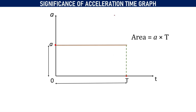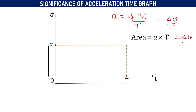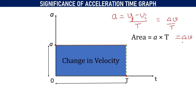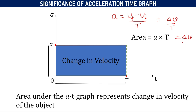If we consider the area under the graph, it will be represented by length times breadth. Since length is equal to acceleration and breadth is equal to time, area equals acceleration times time, which is 'a into t'. Now, acceleration equals change in velocity divided by time taken — that is delta V divided by T. Rearranging this equation, we get: a into t equals delta V, or change in velocity. Therefore, the area under the AT graph represents the change in velocity of the object.